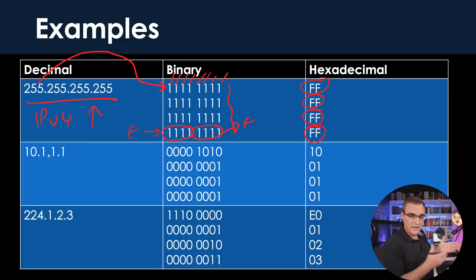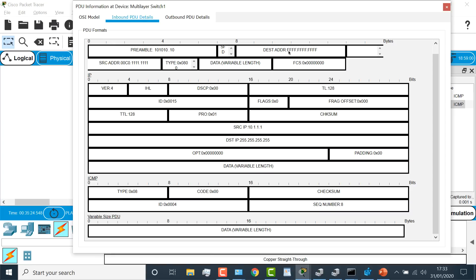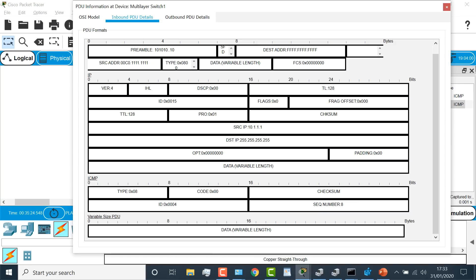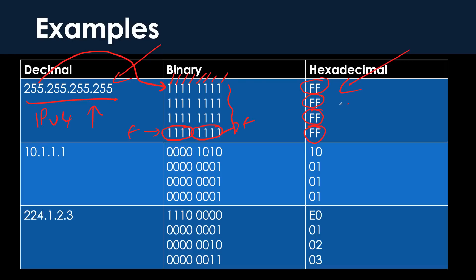Now that you understand hexadecimal conversions, you understand why it did that. This at layer three looks like this at layer two, but a MAC address is actually 48 bits in size, so it's 12 Fs — not eight Fs like in this conversion. So it's not an exact conversion, but that's the hexadecimal equivalent of this IP address.